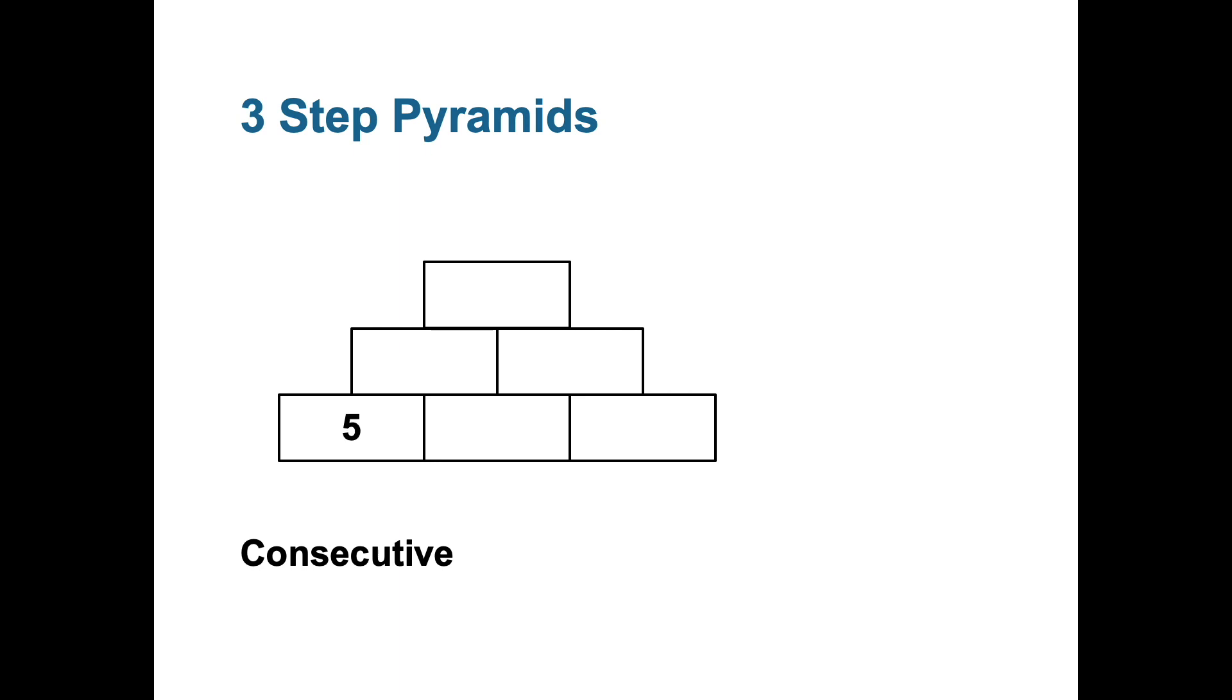So in my example here I have 5, 6 and 7, three consecutive numbers along the base of the pyramid. Now the aim of all the number pyramids is to work out the final answer at the very top as well which I've highlighted in yellow.